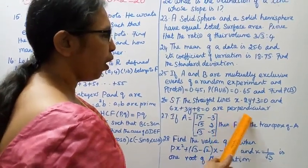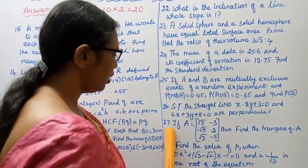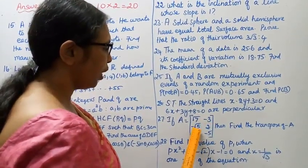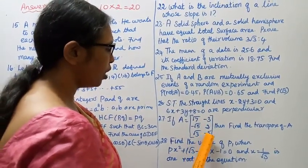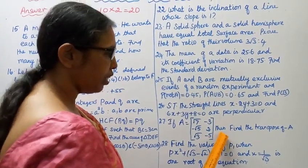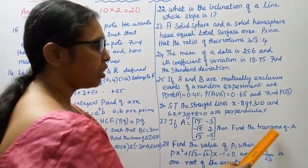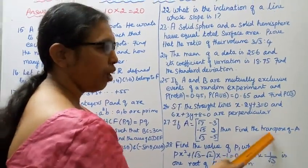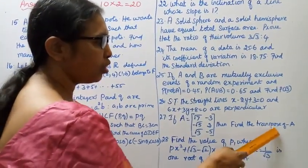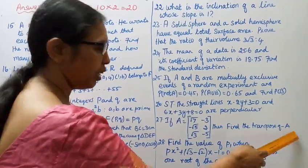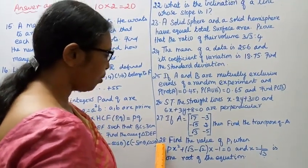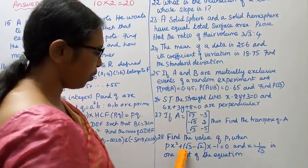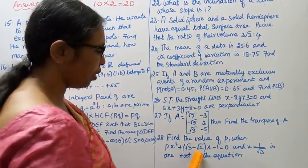Question 27: If A equals the matrix [√7, -3; -√5, 2√3 - 5], then find the transpose of -A. Question 28 (compulsory): Find the value of p when px² + (√3 - √2)x - 1 = 0